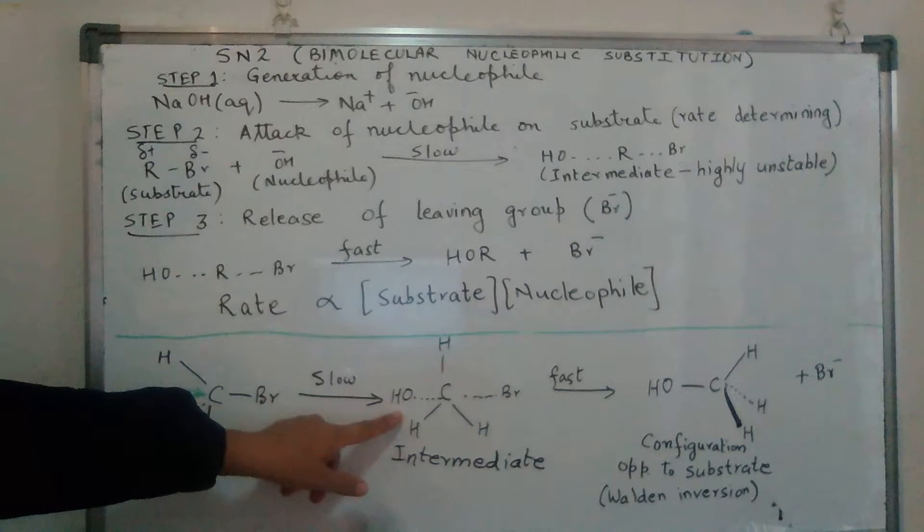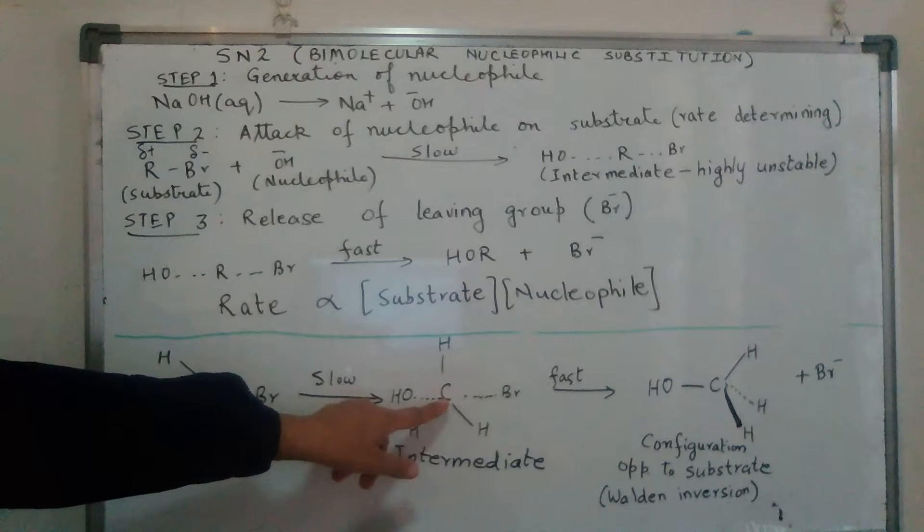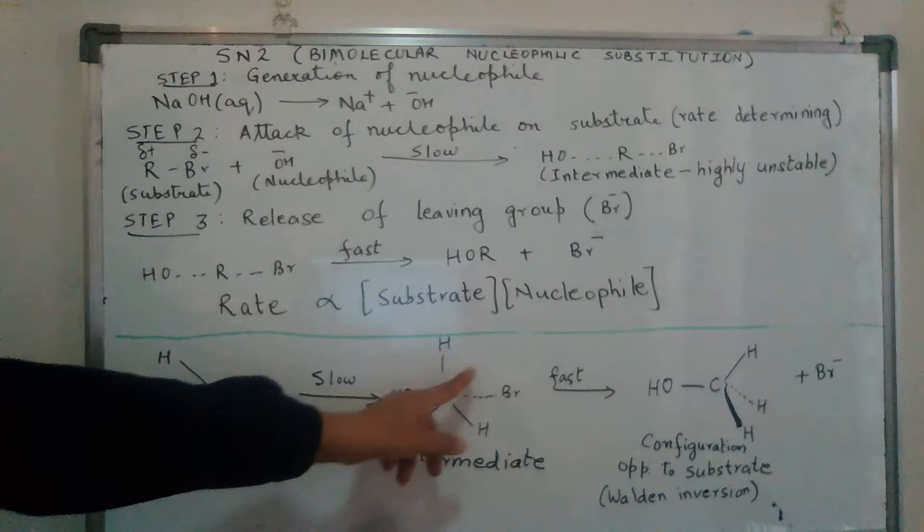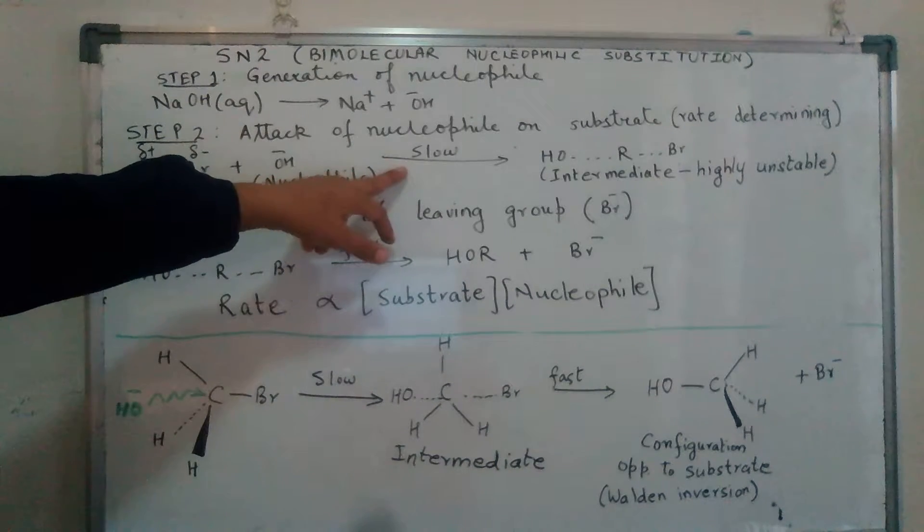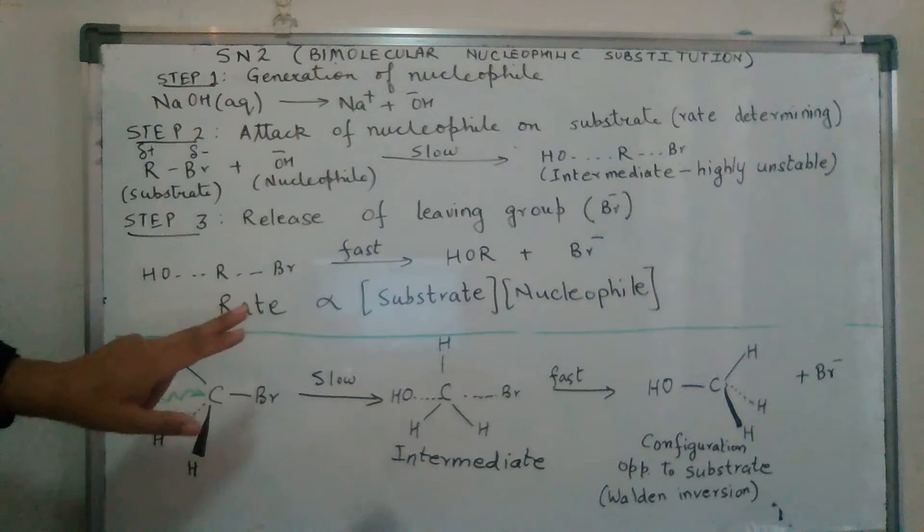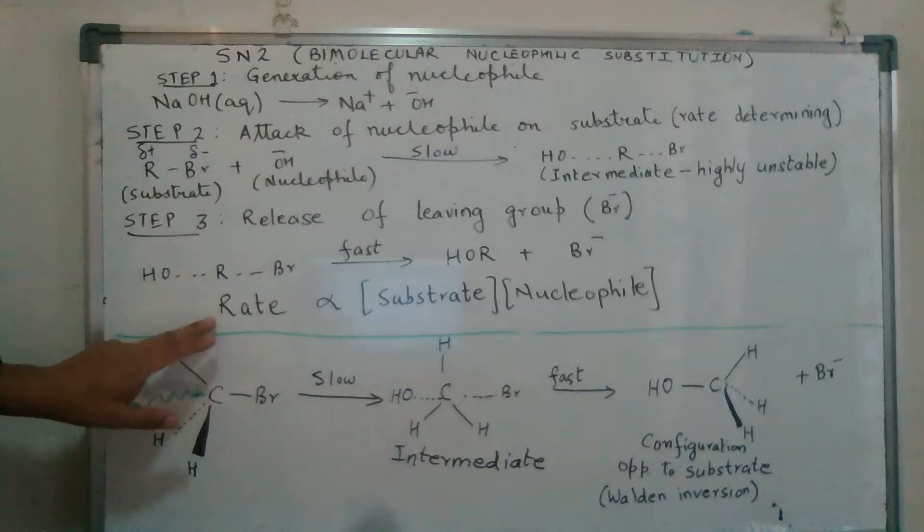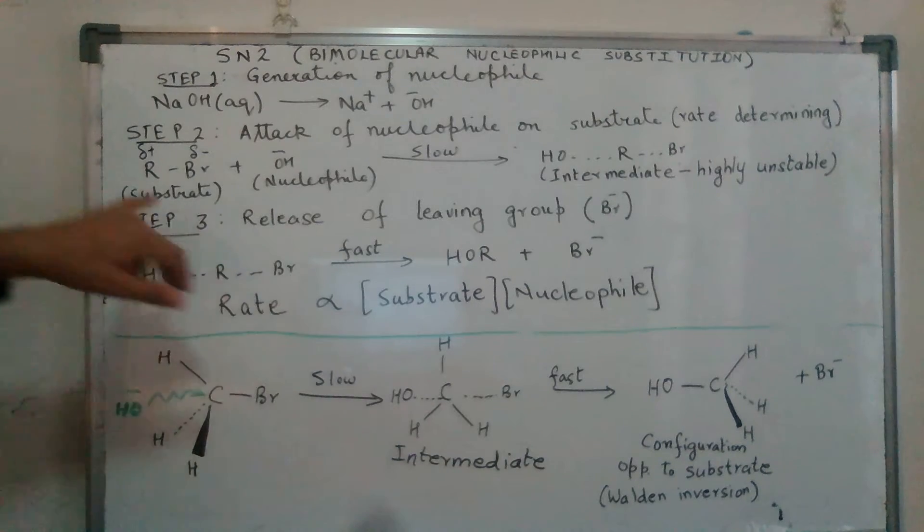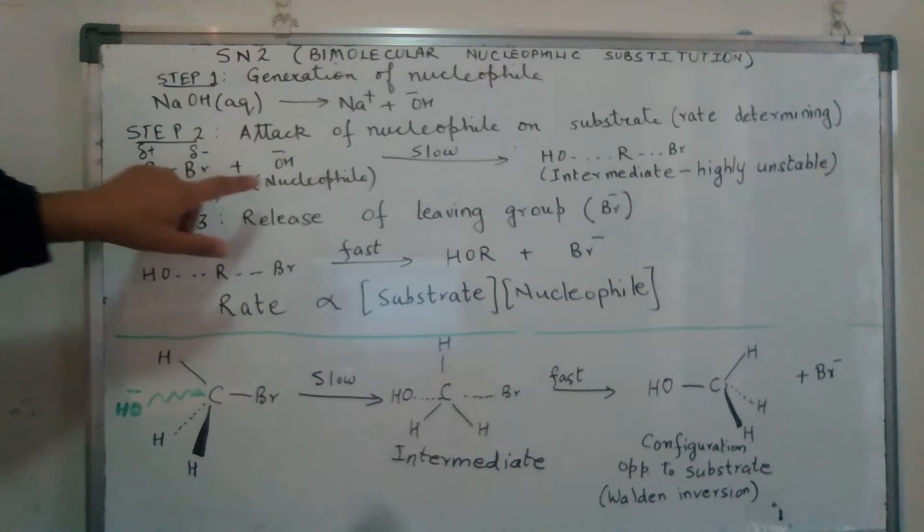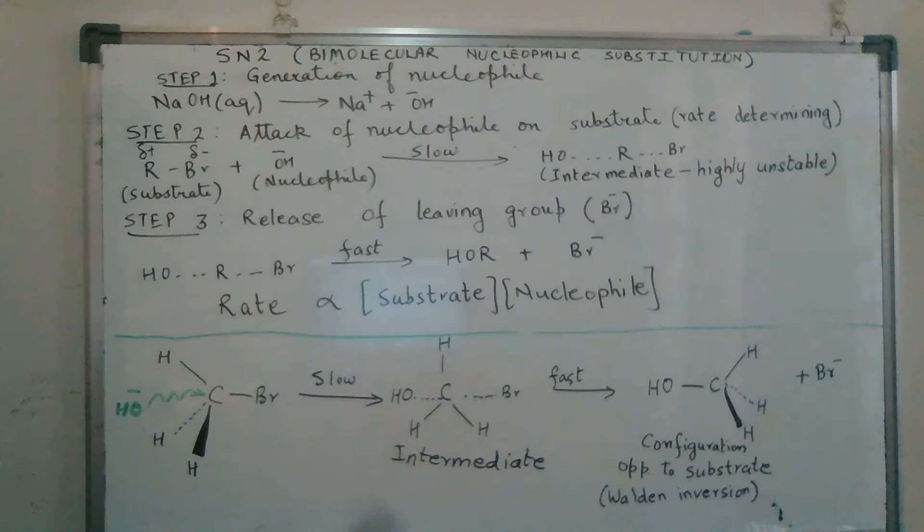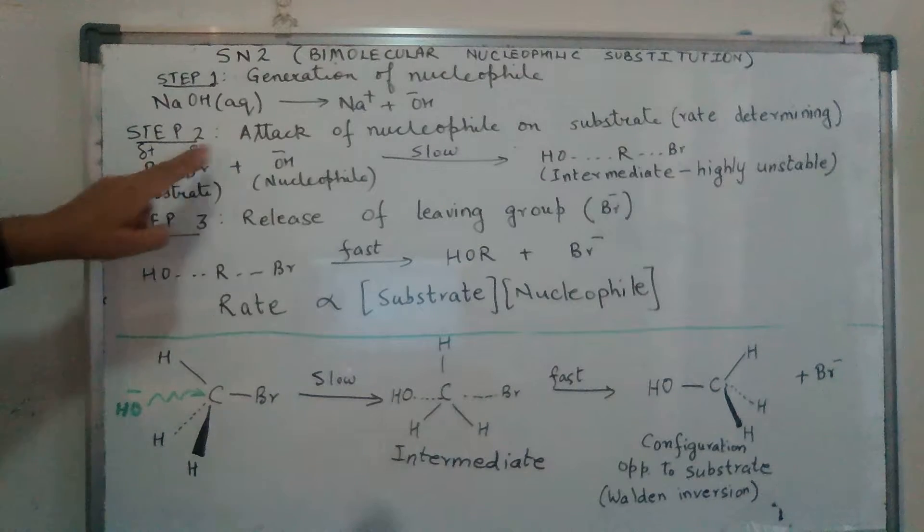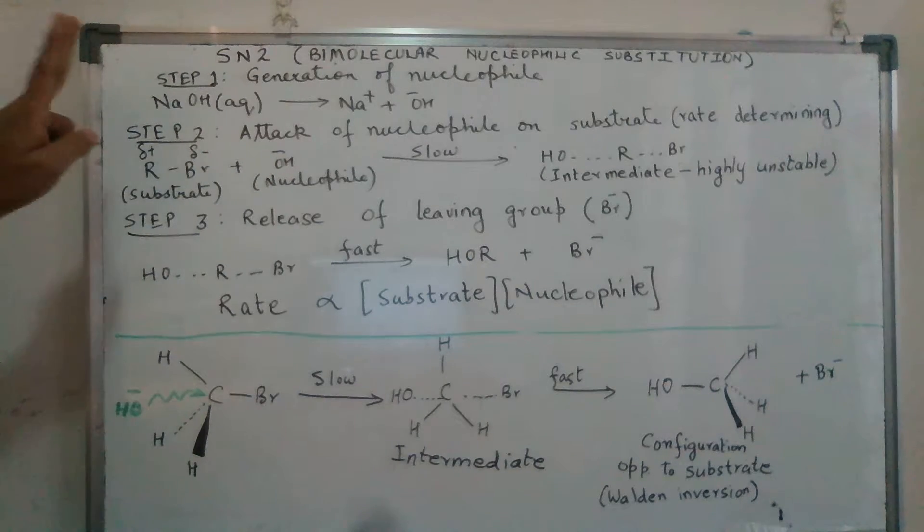The energy being released when the nucleophile gets attached to the carbon is used up for breaking the bond between the carbon and the halide ion. This is a slow step. Always the slowest step is rate determining. Hence, the rate of this particular reaction will depend on the concentration of the substrate and the nucleophile, giving us a second-order reaction. There are two molecules involved - bimolecular, two molecules. As we said, the intermediate is highly unstable.